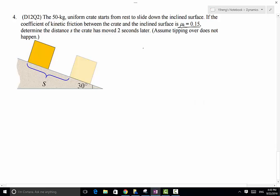We start with the free body diagram of the crate. It's subjected to weight force W equals mg, which is 50 times 9.81, and that is 490.5 Newton.